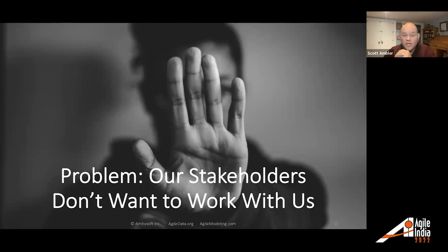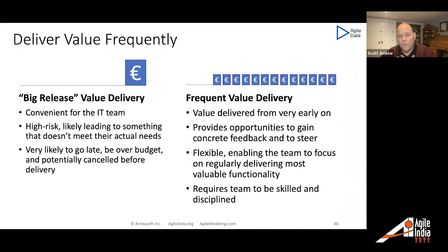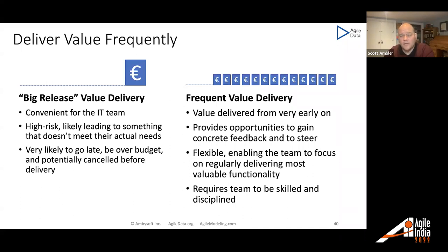Finally, problem eight: our stakeholders don't want to work with us. Fair enough — they're busy people, and we've also burned our bridges in many cases. A big part of the solution is to start delivering value more frequently. Move away from big releases that are highly risky, almost always problematic, and almost always don't deliver what people want. Instead, deliver frequent value on a regular basis — every two weeks, every week, every day. When you start doing that, stakeholders are willing to work with you. 'Tell me what you want today and I'll get it out by the end of the week' is far more attractive than 'give me all your requirements up front and maybe we'll deliver something six to nine months from now.'